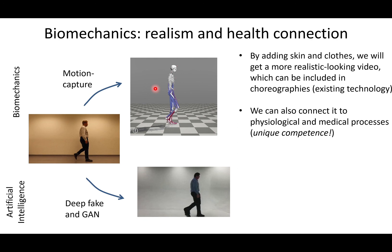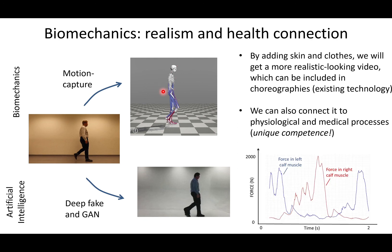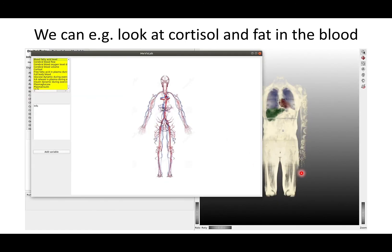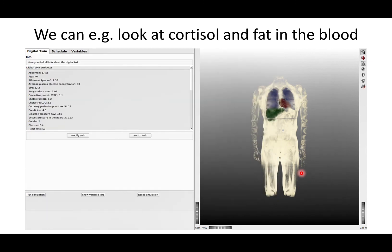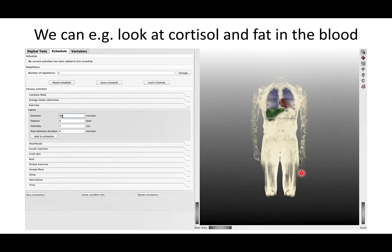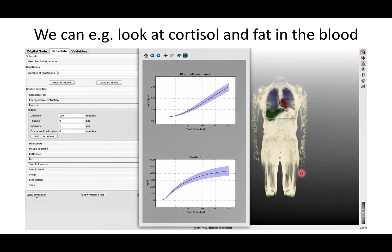The unique thing that we can do that nobody else can do is connect these movements to medical processes. You can look at what happens in the calf muscle on the right and left hand side, for instance. We can click on the blood and look at cortisol levels and fat — how they change during a 100-minute dance session.